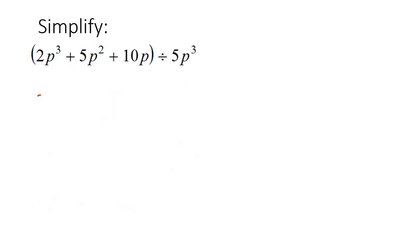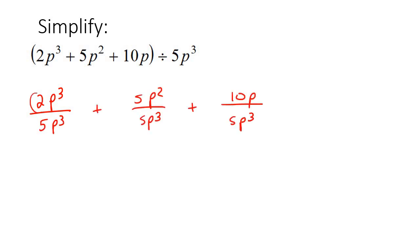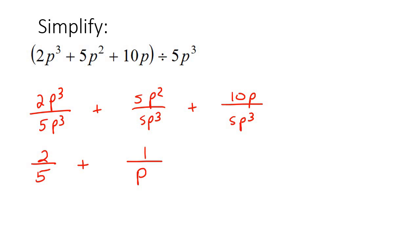For this example, I'm going to go straight into it. Now 2 and 5 cannot cancel, so we leave that. The p's cancel completely, leaving 2 over 5. Here we have a 5 and a 5, which cancel. Then with p squared at the top and p cubed at the bottom, you'd be left with a p at the bottom. For the next part, 10 divided by 5 is 2, and with 1 p at the top and 3 p's at the bottom, you'd be left with 2 p's at the bottom. There's the answer for that one.